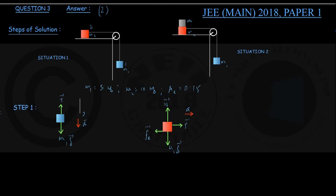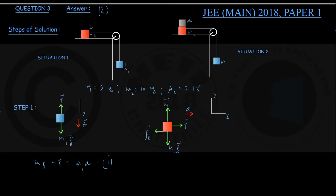Choosing the coordinate axis with plus x pointing rightwards and plus y pointing vertically upwards, we write the equation of motion of mass m1 in the downward direction: m1g − T = m1·A. That is equation 1. Similarly, the equation of motion of mass m2 in the plus x direction: T − Fk = m2·A. That is equation 2. We can also write the y-motion equation: N = m2g.